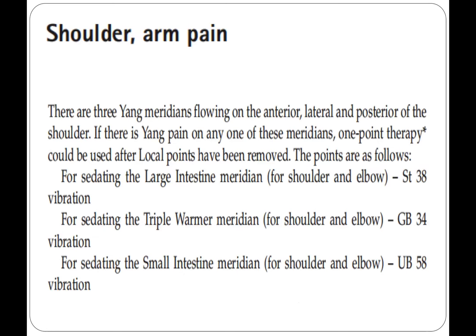For shoulder and arm pain, there are three yang meridians flowing on the anterior, lateral, and posterior of the shoulder. If there is yang pain on any of these meridians, one-point therapy can be used after local points have been removed. For sedating the large intestine meridian for shoulder and elbow, use Stomach 38 with vibration. For sedating the triple warmer meridian, use GB34 with vibration. For sedating the small intestine meridian, use UB58 with vibration.